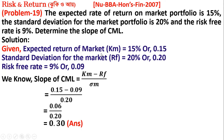The slope of the CML equals the expected return of the market portfolio minus the risk-free rate, divided by the standard deviation of the market portfolio — sigma m. That gives us the slope of the Capital Market Line.